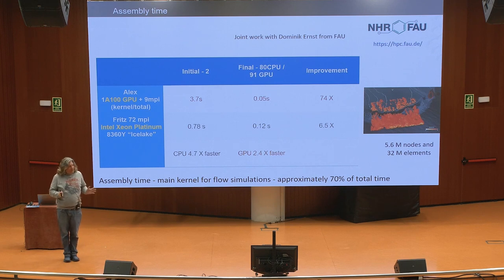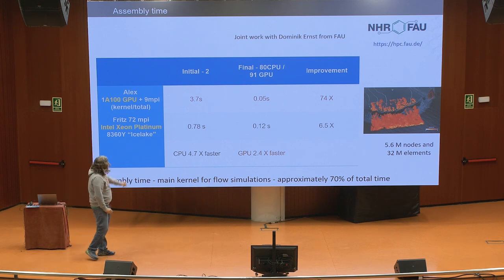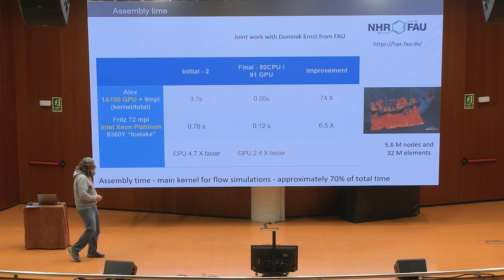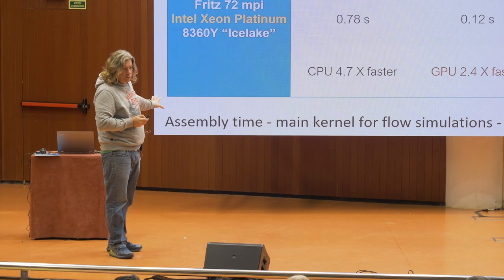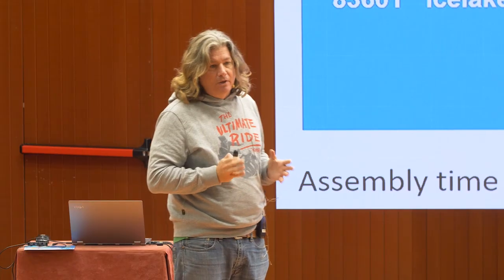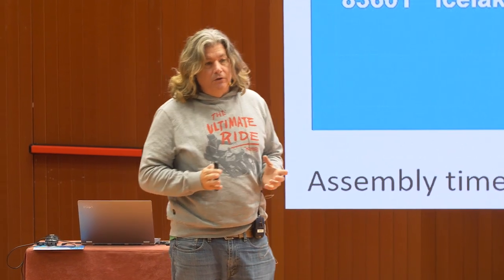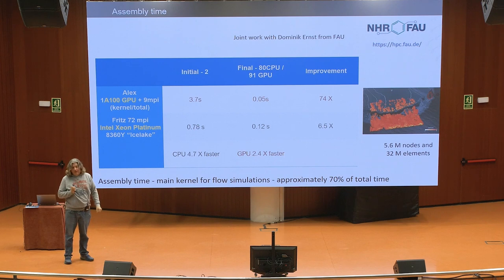Going directly to numbers, since the talk is short: I have been working on the optimization on both GPUs — mainly on GPUs — and this was our initial version with the timings. This was run on an A100 GPU at Fredericks Alexander University, which is the closest thing we have to the next MareNostrum. We have managed to optimize the time from 3.7 seconds to 0.05 seconds — a 74x speedup. This is the execution of the main kernel that typically takes around 70% of the time in a fluid dynamics simulation. After the optimizations we did for the GPU, we realized that most of them were also suitable for the CPU, and we managed to achieve a 6.5x speedup for the CPU.